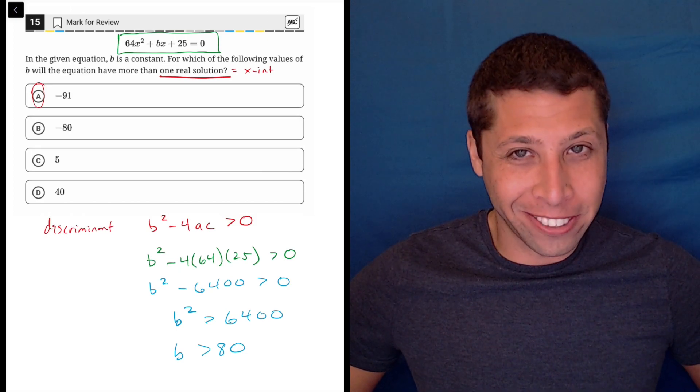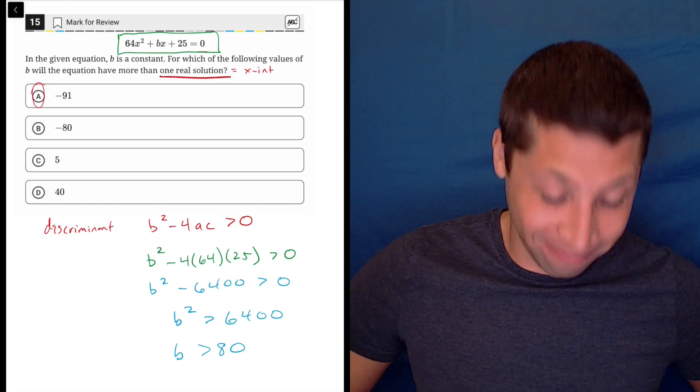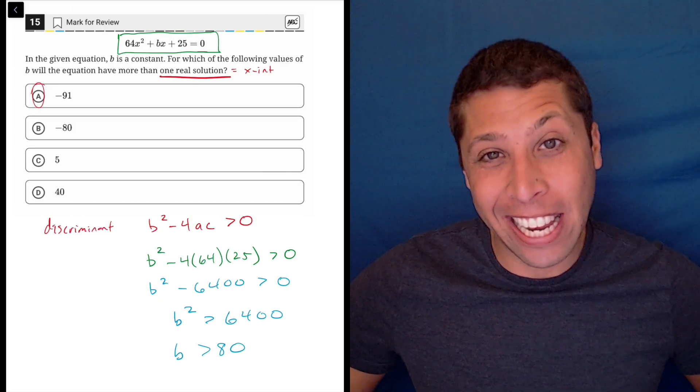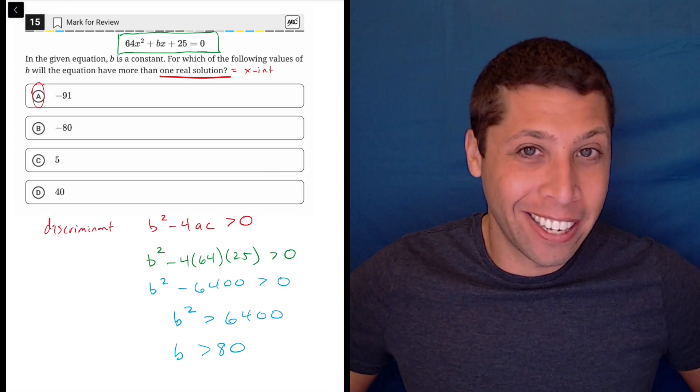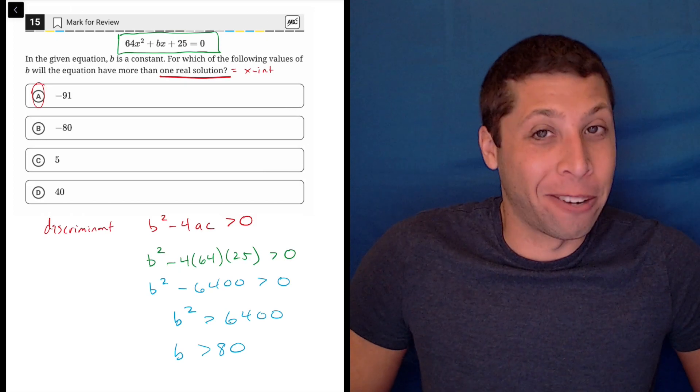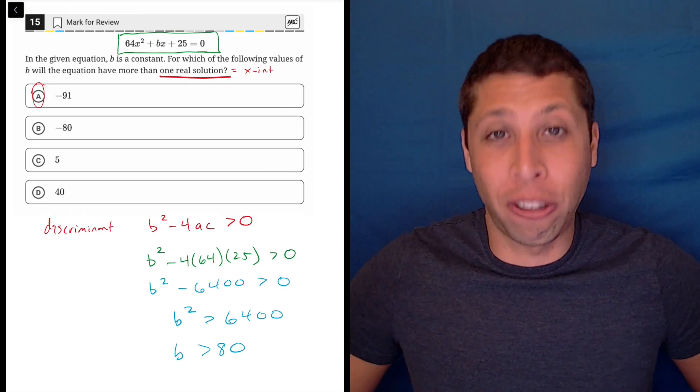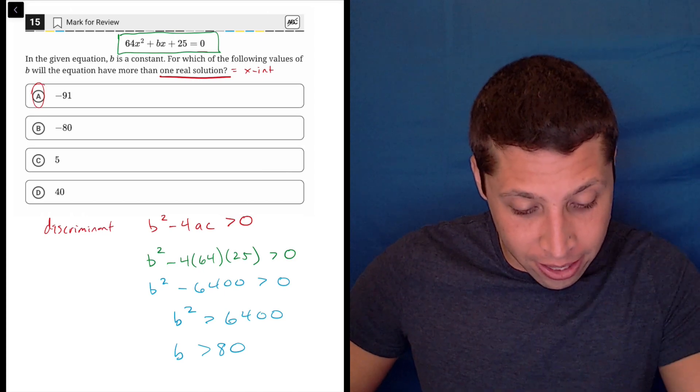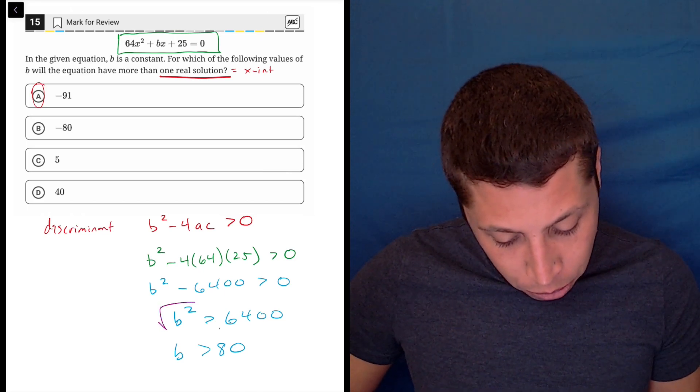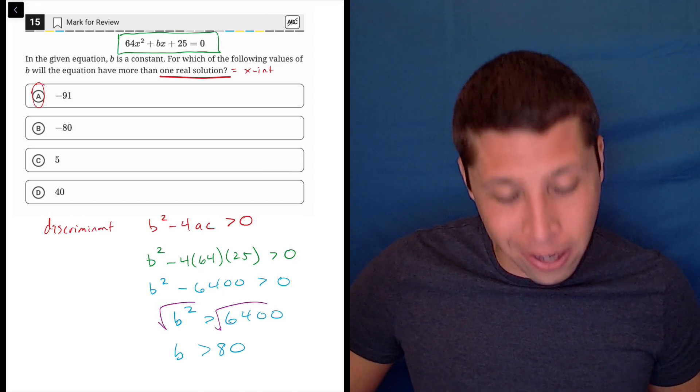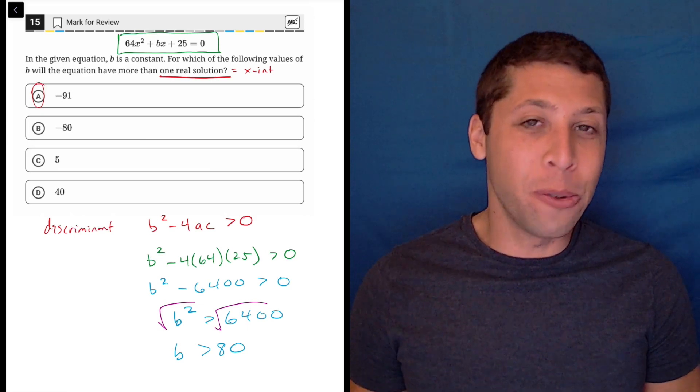Now, we don't have an answer that has b as greater than 80, right? We have a negative 80, but we don't have a greater than 80. So why is A the answer to that? What's going on? Well, of course, there's a little extra twist here, is that I just took a square root of a number, and you're not really supposed to do stuff like this. What we really should have done is factored, and that would have allowed us to get a positive and a negative value.